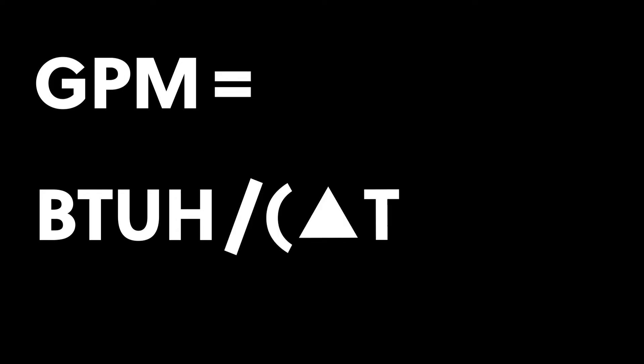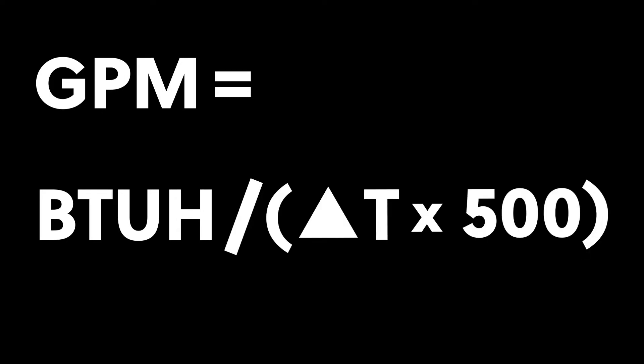So here's the formula. It's GPM equals BTUH divided by delta T times 500. Let's go over what each of those means.